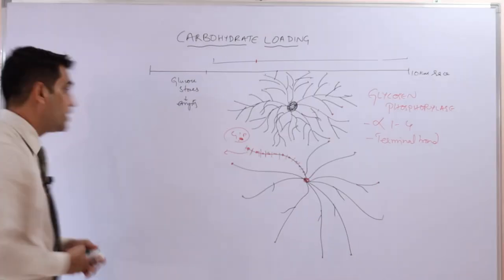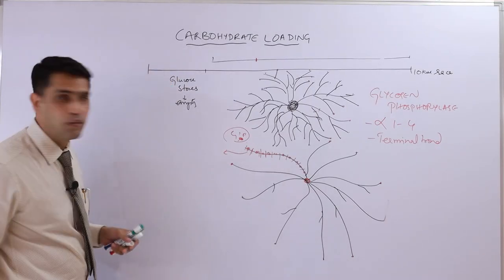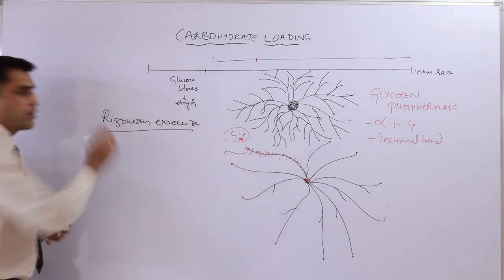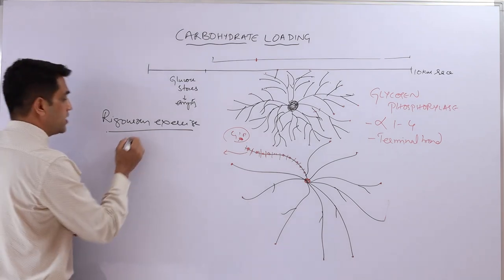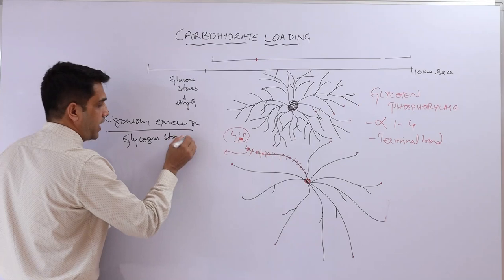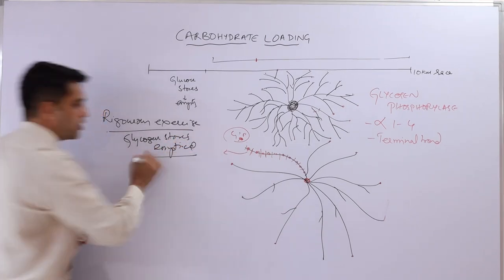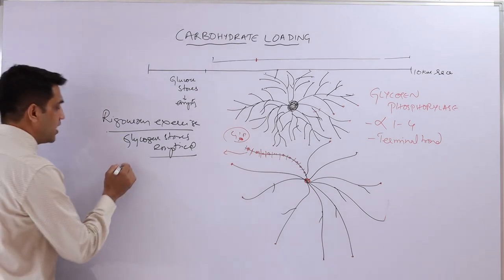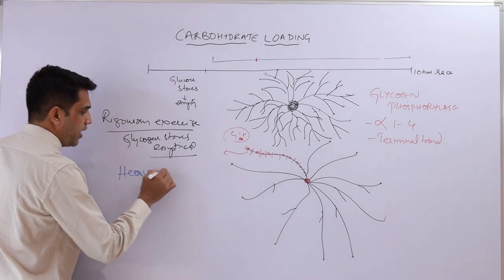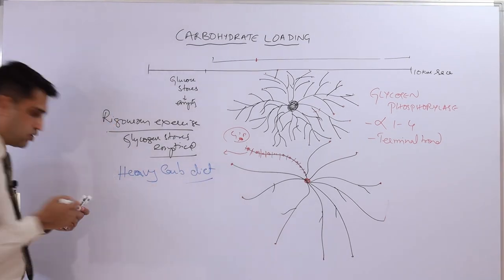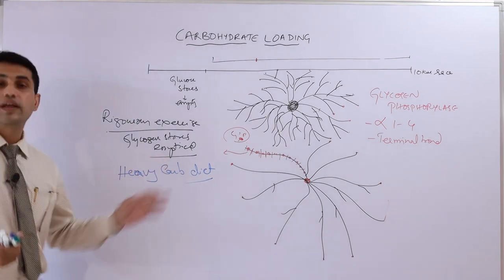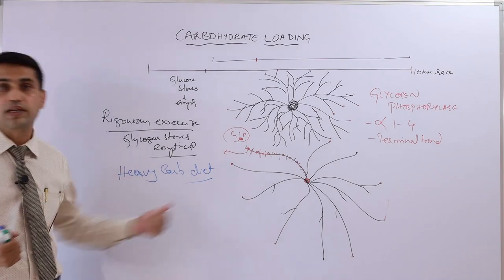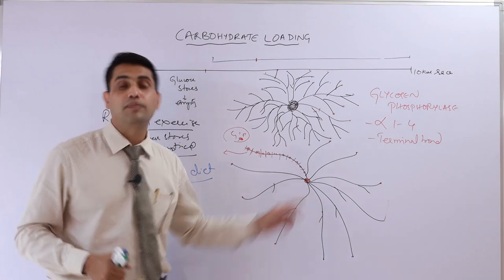The question is how endurance athletes prepare this type of glycogen. They do it by a special process — carbohydrate loading. What they do is perform rigorous exercise, causing their glycogen stores to become completely empty. Then, immediately after that rigorous exercise, they eat a heavy carbohydrate diet. When glycogen stores are empty, glycogen synthesis is waiting for carbohydrate — when you give it a lot of carbohydrate, it immediately starts producing glycogen.